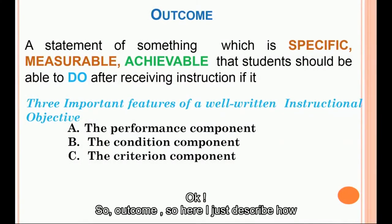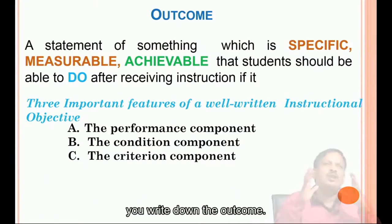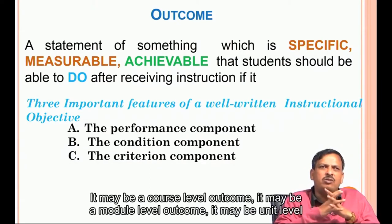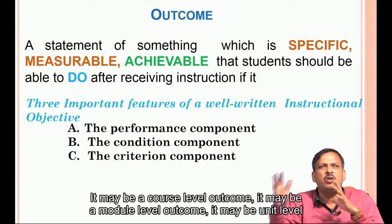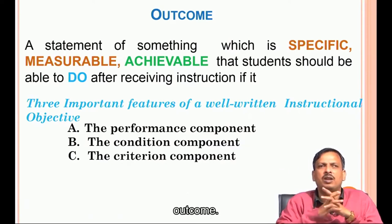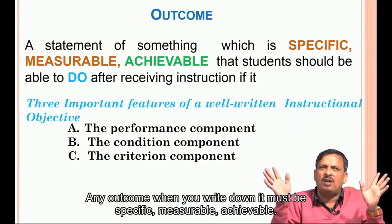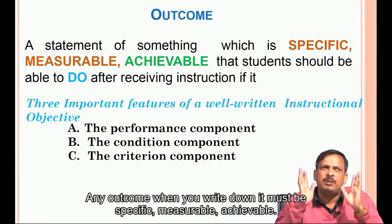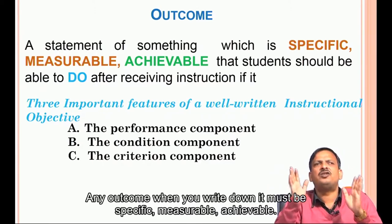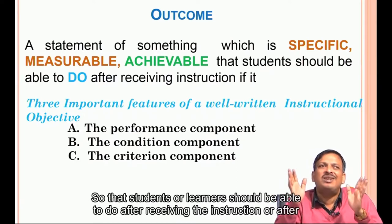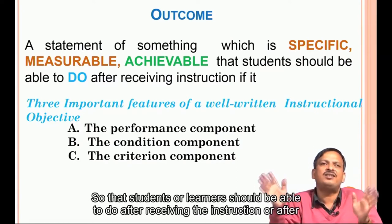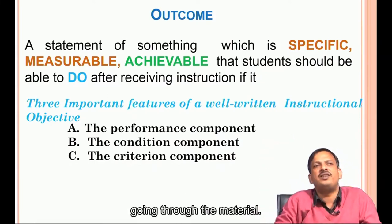Here I describe how you write down the outcome. It may be a course level outcome, a module level outcome, or a unit level outcome. Any outcome when you write it down must be specific, measurable, and achievable — describing what students or learners should be able to do after receiving the instruction or after going through the material.